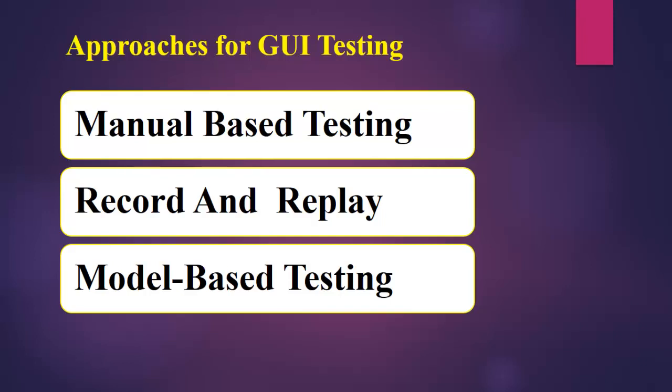The third approach is model based testing, performed as per system behavior. These models can be categorized into three types: event based model, state based model, and domain based model. Based on GUI events of the application we use the event based model; based on GUI states we use the state based model; and based on the domain and functionality of an application we use the domain based model.